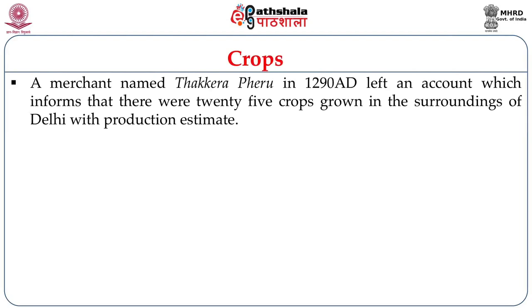There is an interesting record of a merchant named Thakira Feru of 1290, who says that there were 25 crops grown in and around Delhi. He also gives estimates of these crops per month per bigha, though no other source verifies his account. He mentions these crops were regularly sown for many years. Interestingly, he excludes indigo and poppy — indigo remained at that time a large export item in agricultural production, and it is likely that indigo and poppy were not grown in and around Delhi.